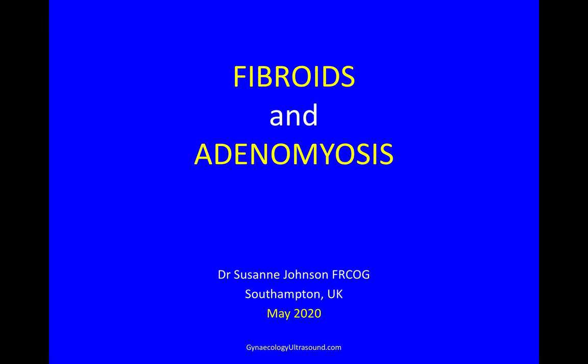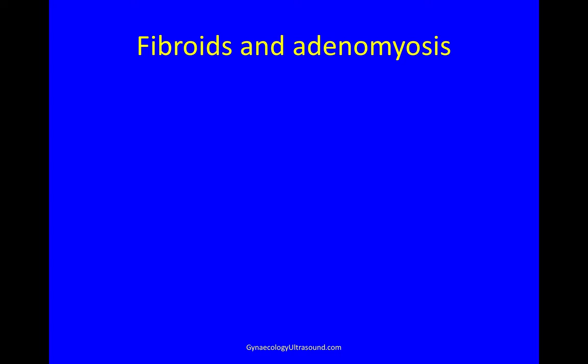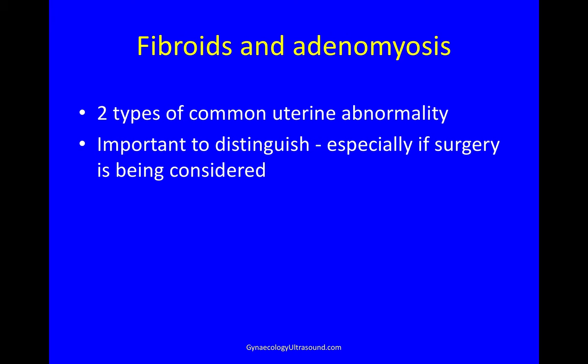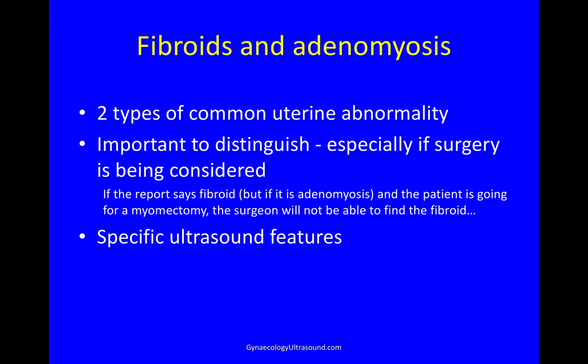This is a video about fibroids and adenomyosis. My name is Suzanne Johnson and I'm a gynaecologist from Southampton. Fibroids and adenomyosis are two types of common uterine anomaly. It's important to distinguish between them, especially if surgery is being considered. They have specific ultrasound features and they can coexist.